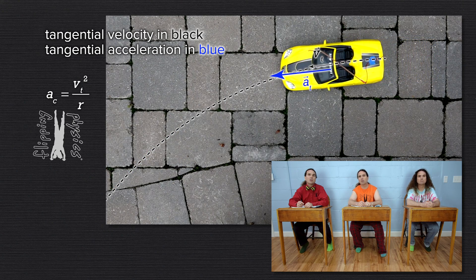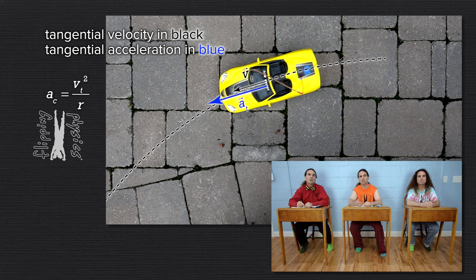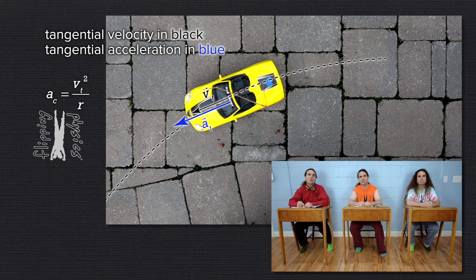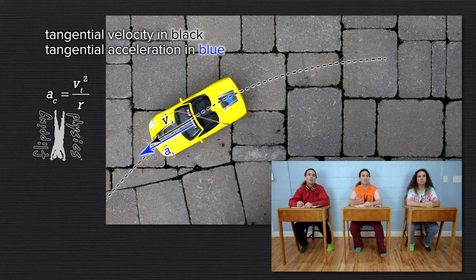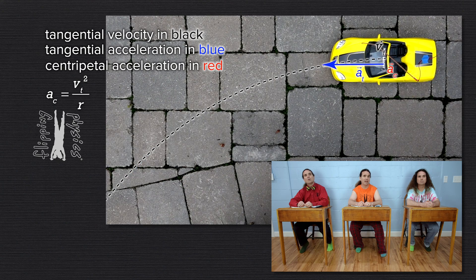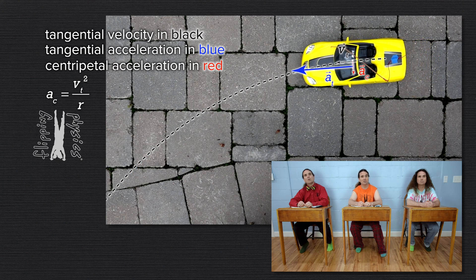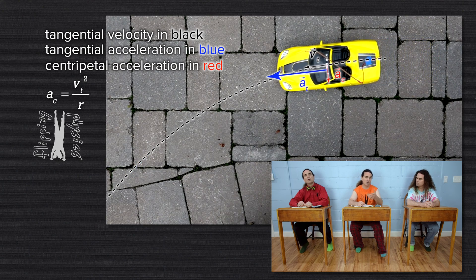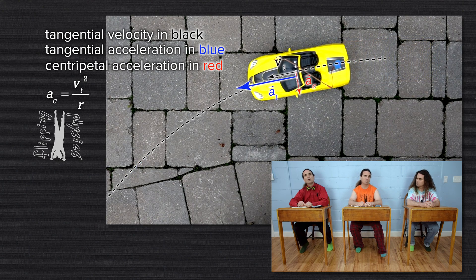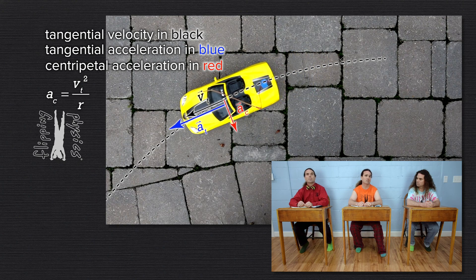Therefore, because the initial tangential speed of the car is zero, the initial centripetal acceleration of the car is zero. And as the tangential speed of the car increases, the centripetal acceleration of the car must also increase.